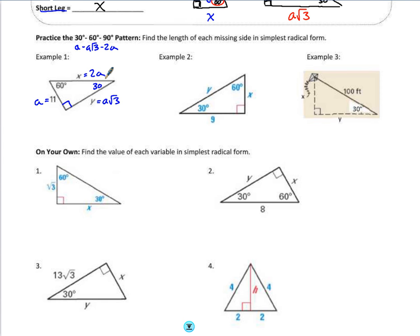So now all I have to do is go ahead and find the value of a and plug it in to find my missing variables x and y. Since a is equal to 11, then I can go ahead and plug in 11 for all of my a's. So which makes x equal to 22, and it makes y equal to 11 root 3.